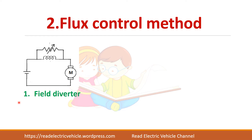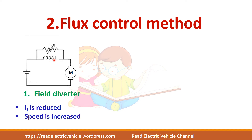Next you have the field control method or flux control method. There are different techniques to control the flux in a series motor. The first one is the field diverter, where a resistance is connected in parallel with the field winding. The total current gets divided into two paths. Based on the resistance value, a part of the current will flow through the resistor, so the field current is reduced. If the field current is reduced, the speed is increased.